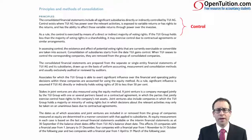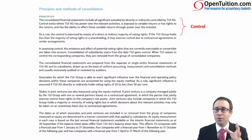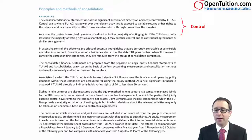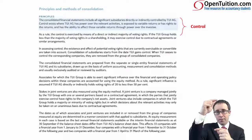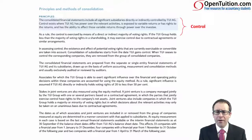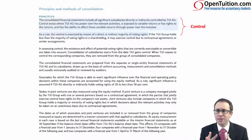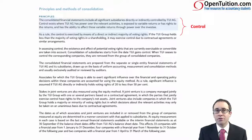Looking at the TUI disclosure on control, in that first paragraph it tells us the consolidated financial statements include all significant subsidiaries, whether they are directly or indirectly controlled — so it doesn't just have to be parent-sub; it can be parent, sub, sub-sub. The second paragraph explains how they have control: by means of a direct or indirect majority of voting rights. So it's not just down to percentage ownership; it's determined based upon the voting rights, which is something we've spoken about throughout group accounts.